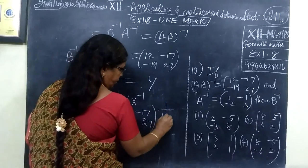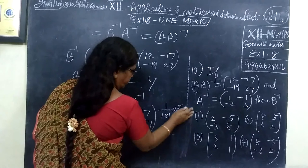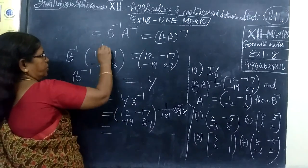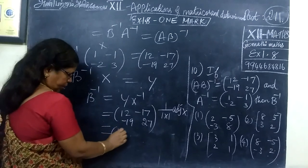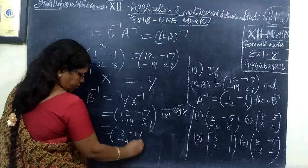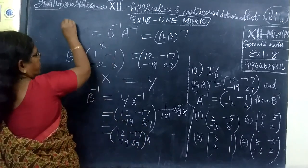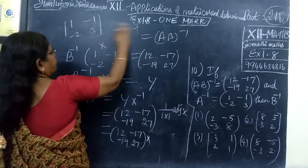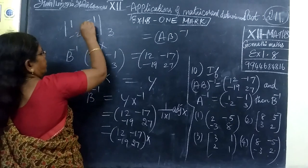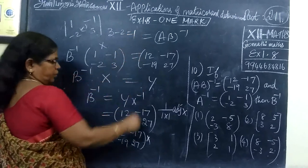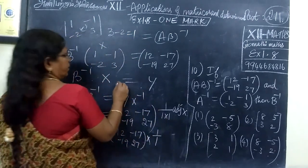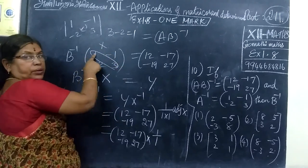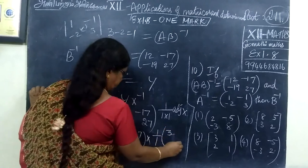So B inverse equal to Y, X inverse equal to Y. The value is 12 minus 7, then minus 19, 27. X inverse is 1 by determinant into adjoint. So determinant A is 12 minus 17, minus 19, 27. Determinant is 1 minus 1, minus 2, 3. Cross multiply: 3 minus 2 equals 1. So equal to 1 by 1 adjoint. This is X adjoint, leading diagonal interchange: 3 minus 1 plus 1, then minus 2 plus 2.